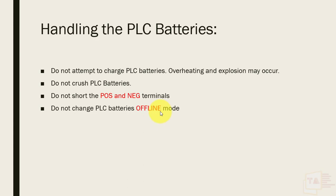We can change the battery in the PLC, and we should change it within its half-range lifetime. In preventive maintenance or a check sheet, you should change the battery every one year within its lifetime. After the low battery indication, you can change the battery in low mode before uploading the PLC program.